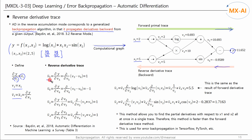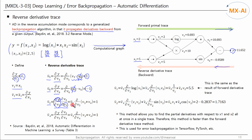By definition, v5-bar is the partial derivative of y with respect to v5. In the graph, y is v5 minus v6; since v6 is independent of v5, v5-bar becomes 1. V6-bar is the partial derivative of y with respect to v6; since v5 is independent of v6, v6-bar is negative 1. V3-bar is the partial derivative of y with respect to v3, which by the chain rule means v3 is independent of v4, so v4-bar is also 1.